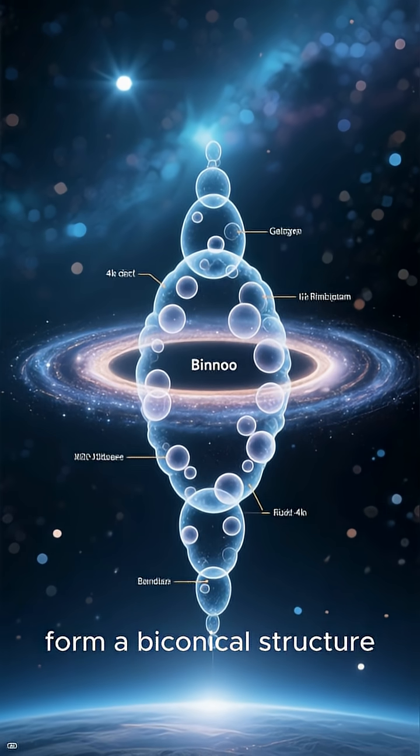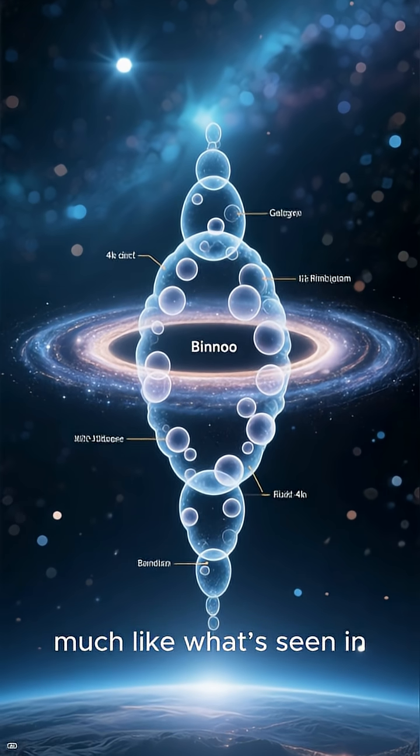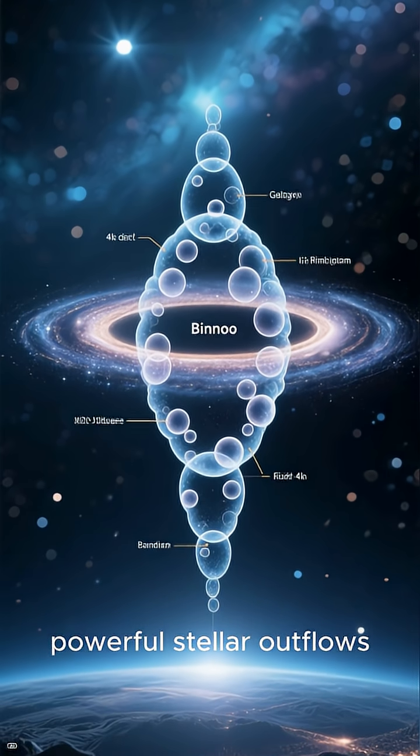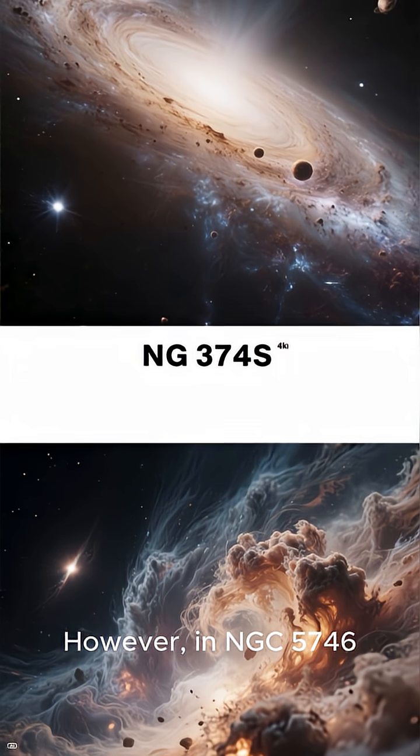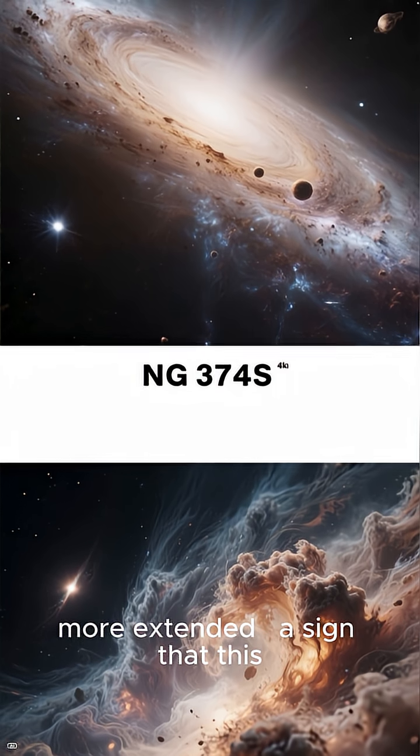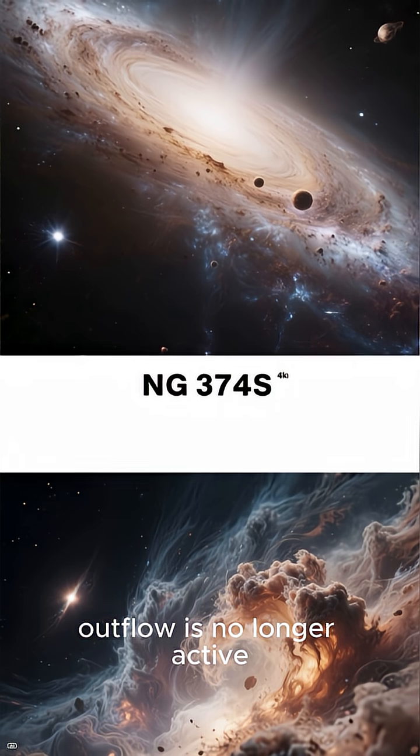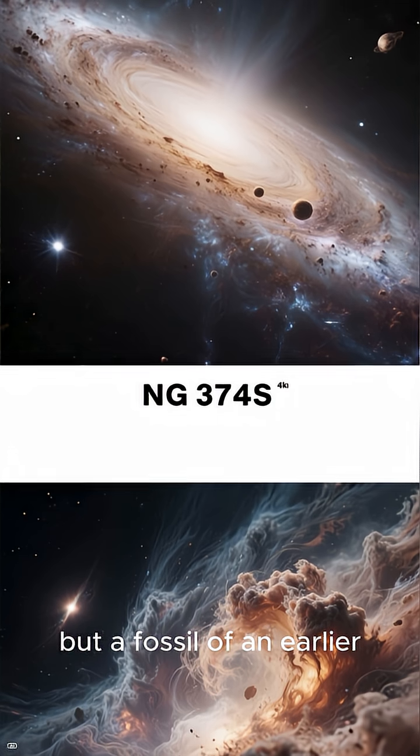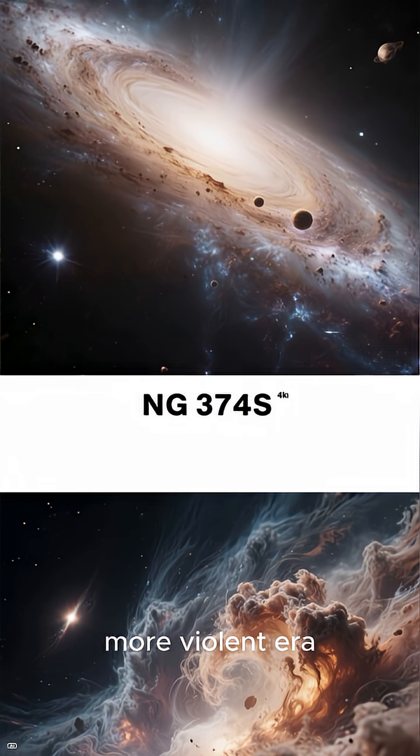These bubbles form a biconical structure, much like what's seen in galaxies with powerful stellar outflows. However, in NGC 5746, the gas is smoother, more extended, a sign that this outflow is no longer active, but a fossil of an earlier, more violent era.